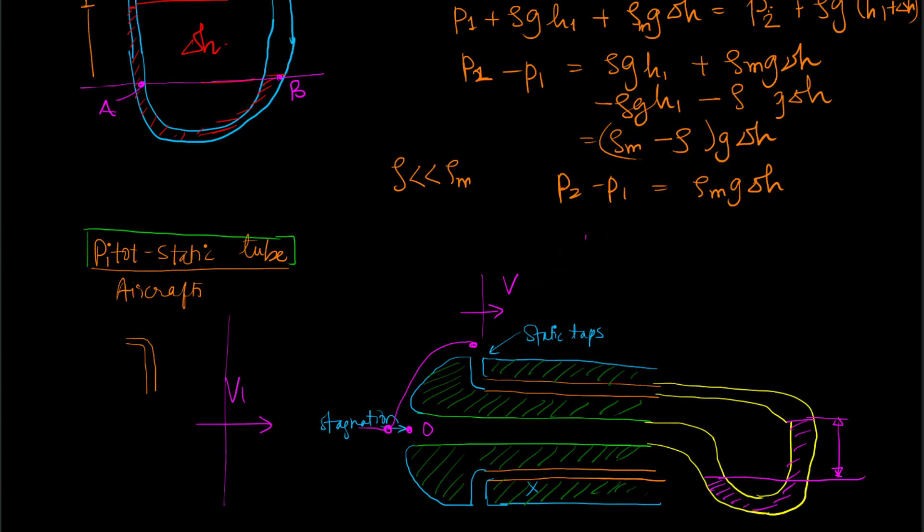Between those two points, p naught is the stagnation pressure. P naught equals p plus half rho v squared. If the tube is quite small, the change in elevation is going to be quite small. So p naught minus p, which is delta p, is going to be half rho v squared, and so v is going to be square root of 2 delta p upon rho.